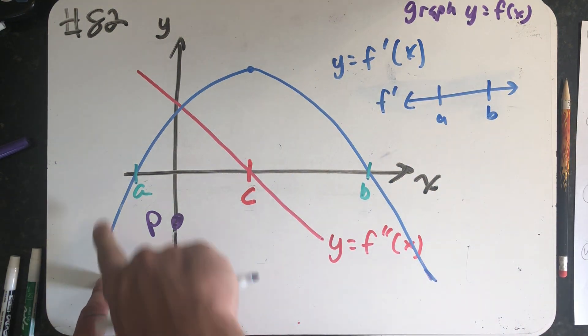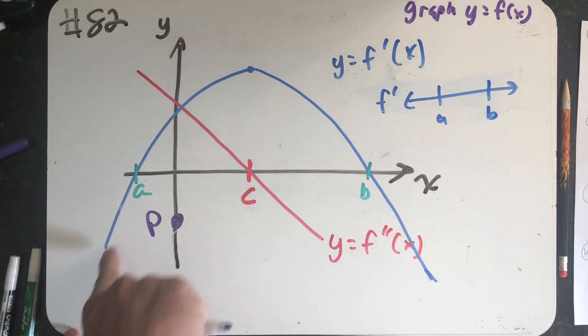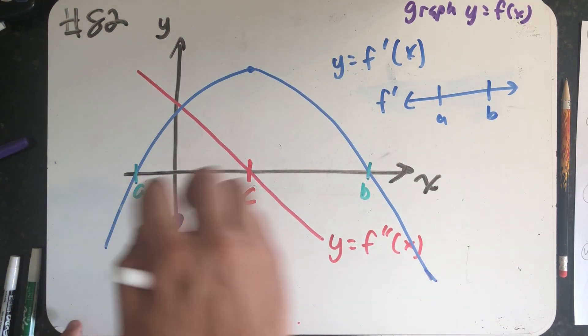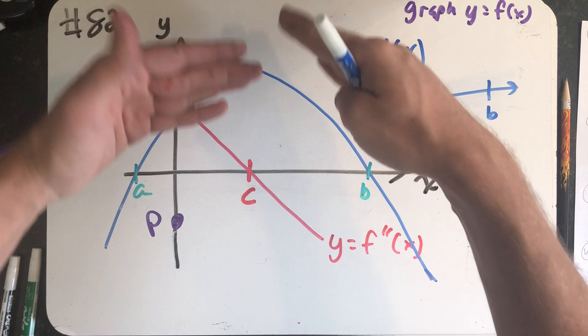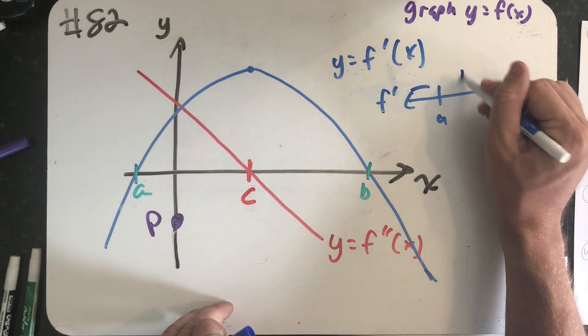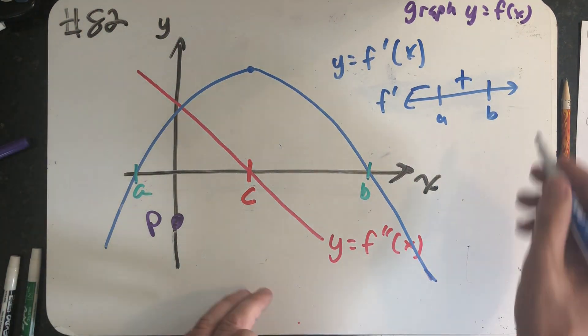So looking at the first derivative, I'm under the x-axis before I get to a. So those are spots where my first derivative is literally negative, has a negative value. Between a and b, my first derivative is literally positive. And then after b, it's negative again.